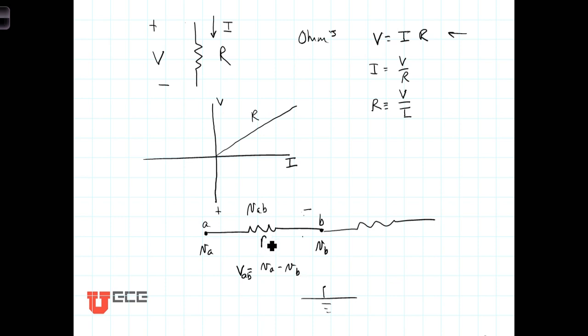If this resistor had a value of R, then we could also say that the current flowing through this resistor, once again defined flowing from the higher terminal, or the higher reference voltage to the lower reference voltage, I, would equal V sub A minus V sub B—that's just the voltage across it—divided by R.